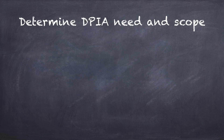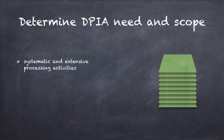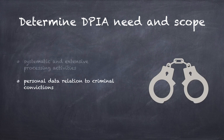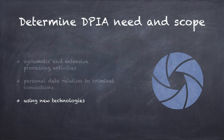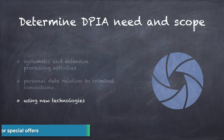First, you should determine the need and scope for a DPIA. A DPIA would generally be required before you process personal data and when the processing is likely to result in a high risk to the rights and freedoms of individuals. Processing that is likely to result in a high risk includes systematic and extensive processing activities including profiling, large-scale processing of special categories of data or personal data relating to criminal convictions or offenses, and the use of new technologies such as surveillance systems or facial recognition. You must also take into account the nature, scope, context, and purposes of the processing when deciding whether it is likely to result in a high risk.